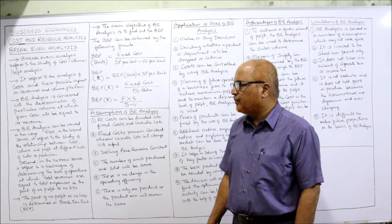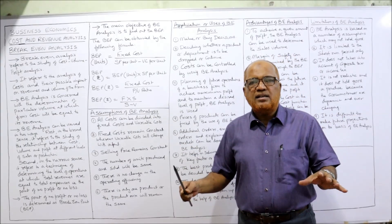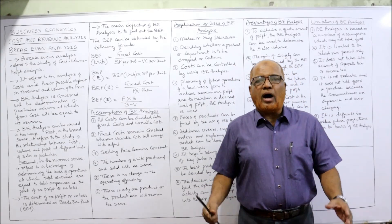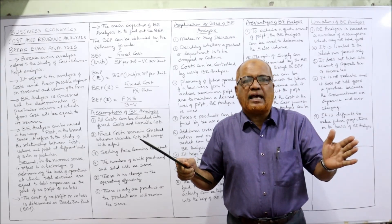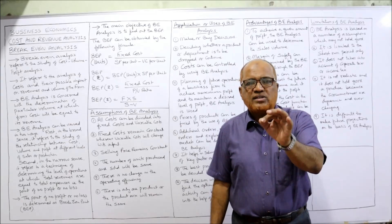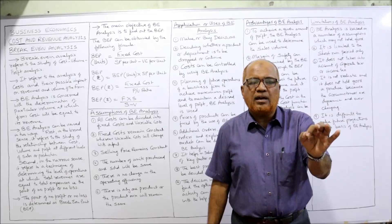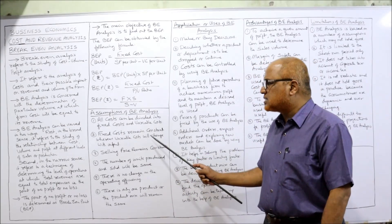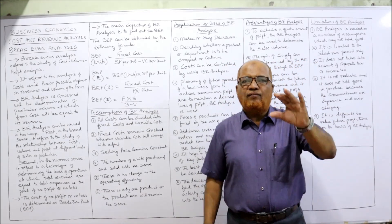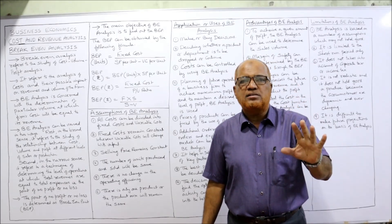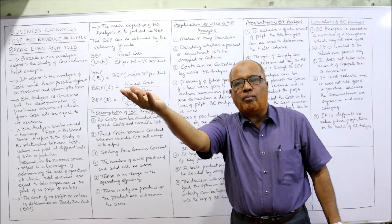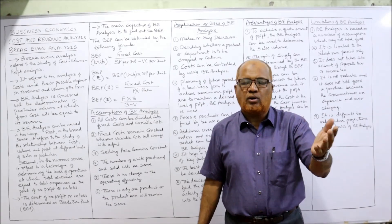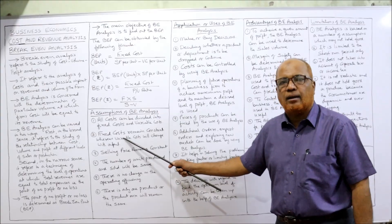Break-even analysis is based on a number of assumptions. First assumption: all costs can be divided into fixed and variable cost. Until and unless costs are clearly classified into fixed and variable, we cannot apply break-even analysis. Second assumption: fixed cost remains constant whereas variable cost changes with output. We assume fixed cost will always remain the same whether we produce fewer or more units, and variable cost changes proportionately with output.